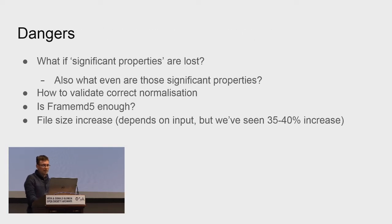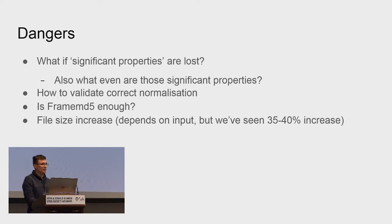Some of the dangers here are: what if significant properties are lost, and even figuring out what those significant properties are. How do you validate that the normalization was correct? I think anytime you do these kinds of file format migrations, you have to be really, really careful. Unless you have a really good reason, you might be better off staying away from it.